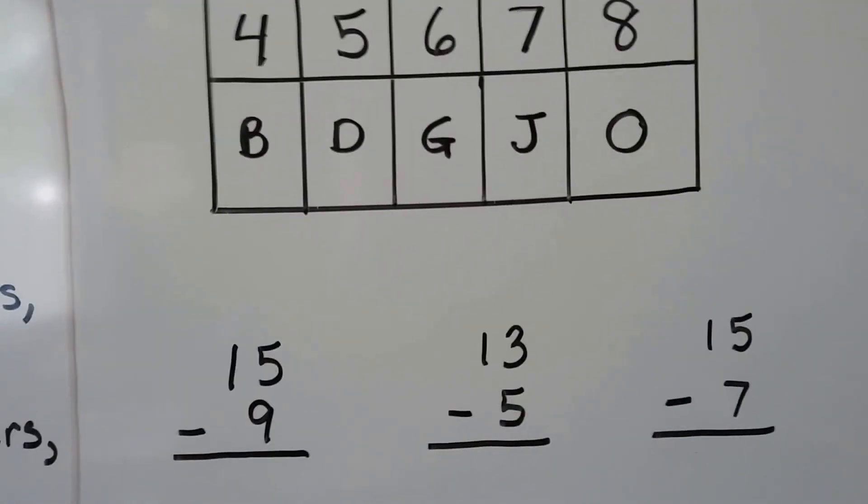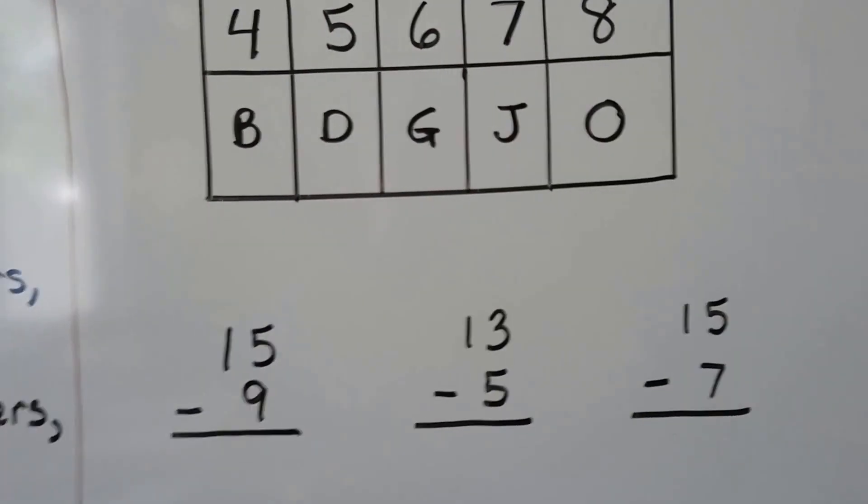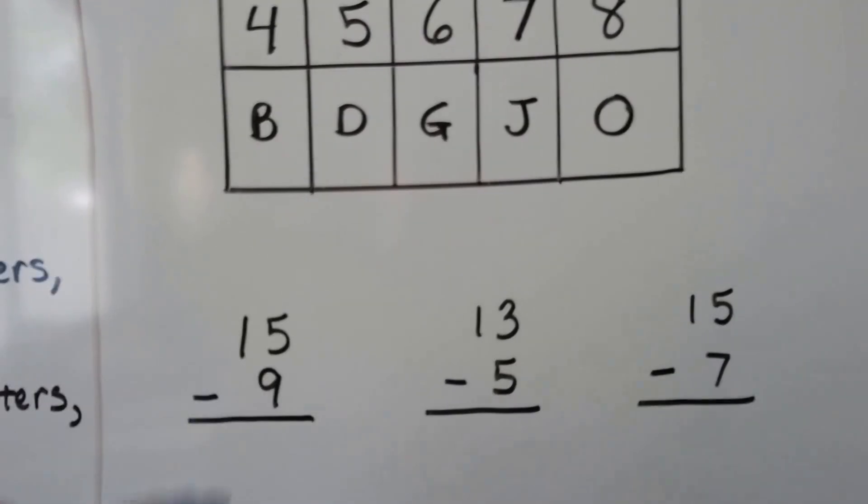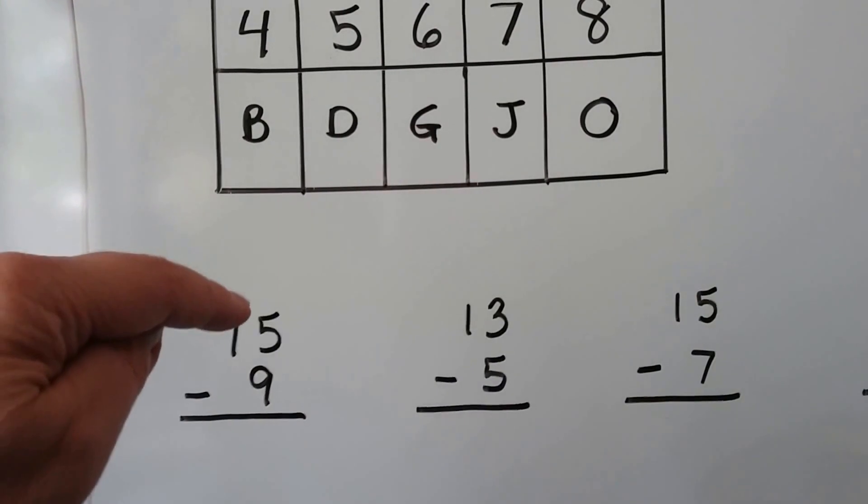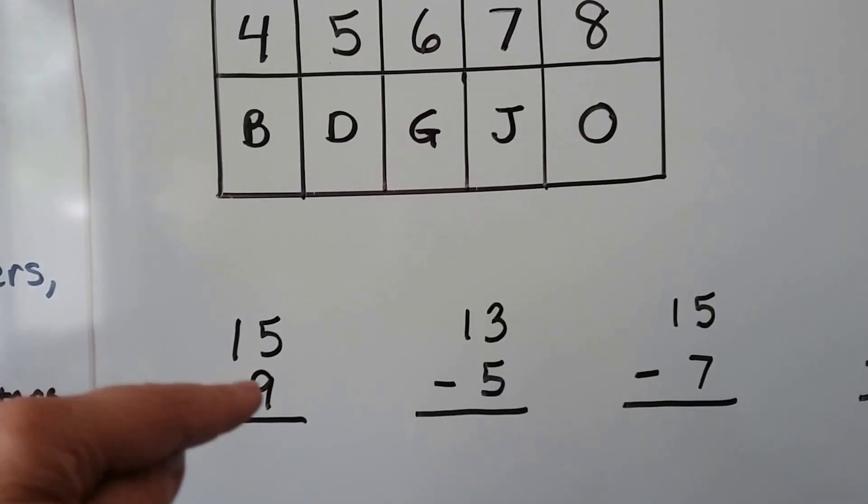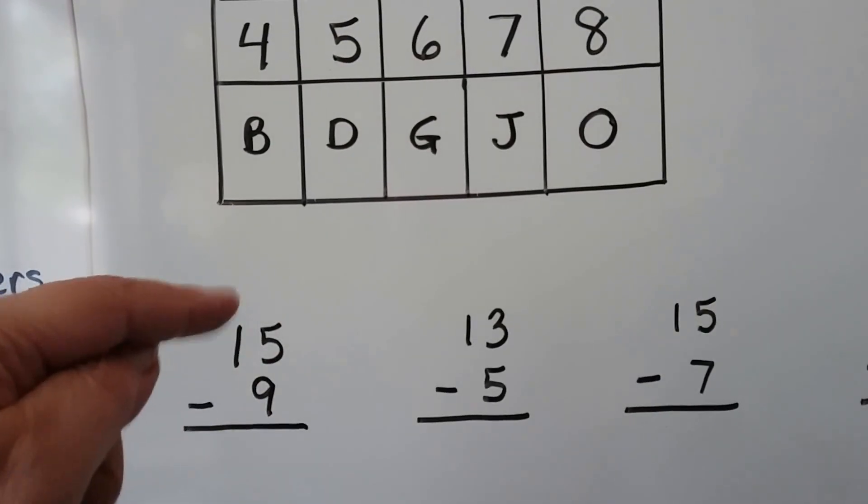So we're going to do subtraction to see if we can find the secret message. What's 15 minus 9? We can either start with 15 and count back to 9, or we can start from 9 and count up to 15.